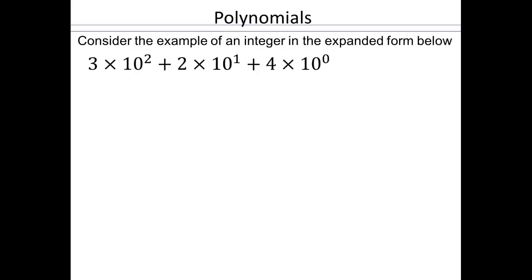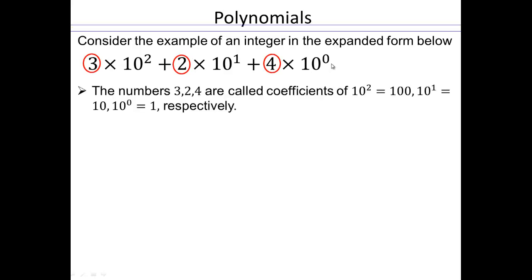Let's talk about polynomials in this lecture. When we looked at integers like 324 in the expanded form, we wrote it in this format. We said 3 times 10 squared plus 2 times 10 plus 4 times 10 to the 0. And we said that the numbers 3, 2, and 4 are called the coefficients. 3 is the coefficient of 100 or 10 squared, 2 is the coefficient of 10 to the 1, and 4 is the coefficient of 10 to the 0.